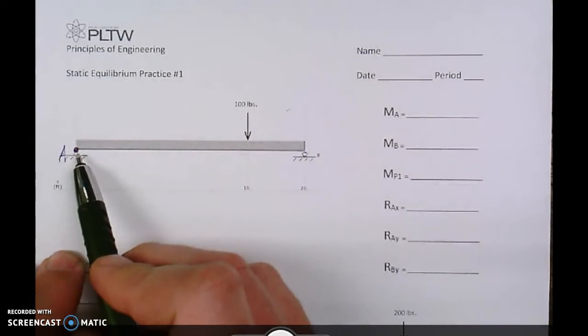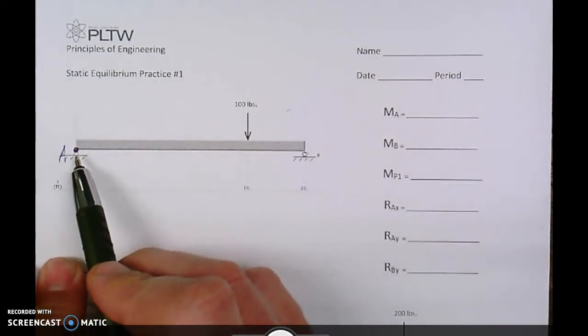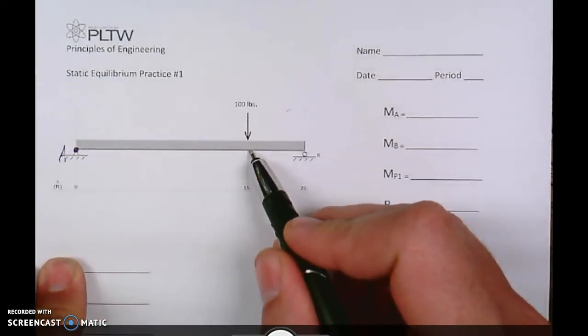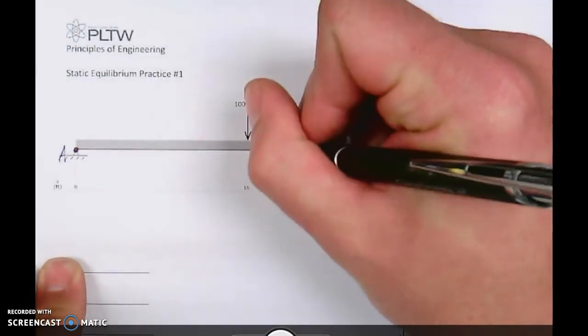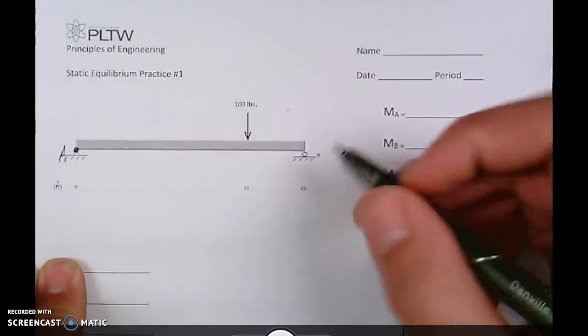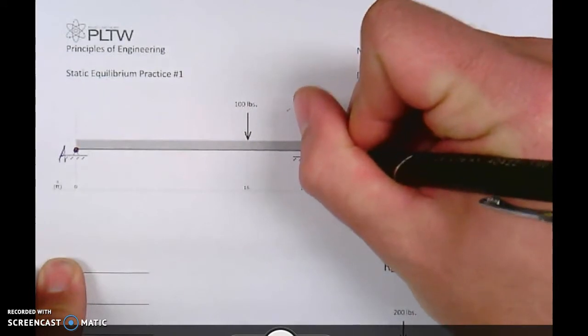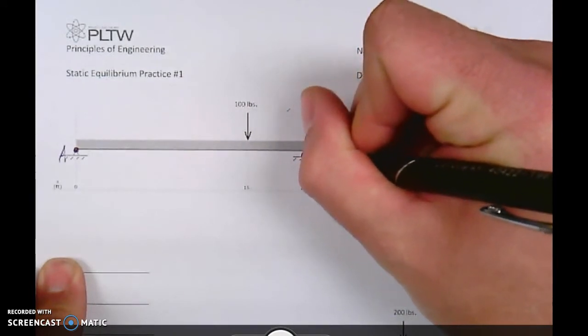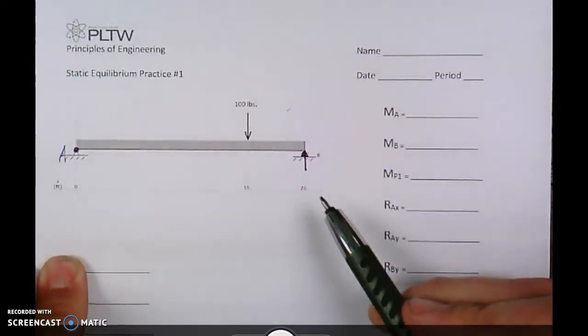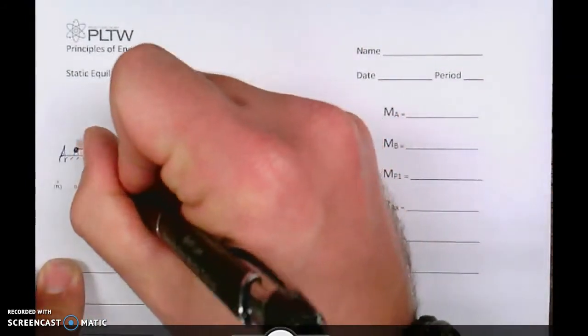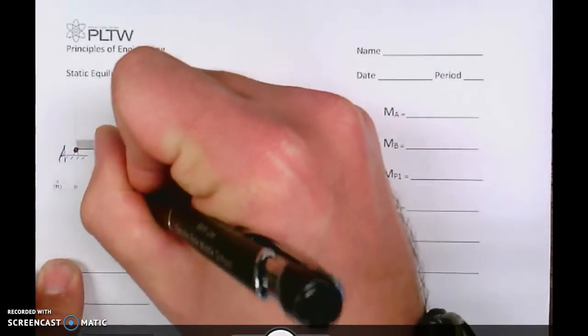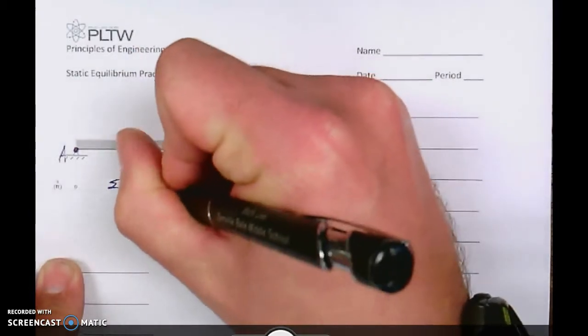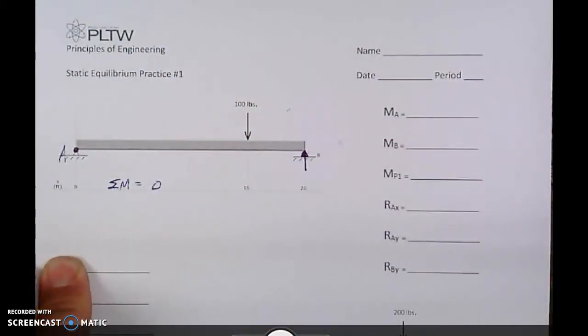Now, from right here we have two moments where we have one right here at 15 feet out where we have 100 pounds going down. We have another one at the roller that is in the opposite direction. The sum of those two moments has to equal zero, so they have to balance out so that this thing is said to be in equilibrium.